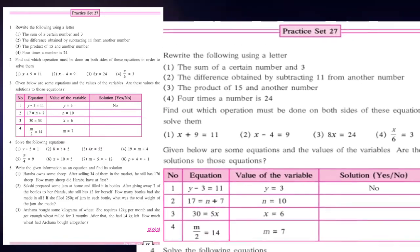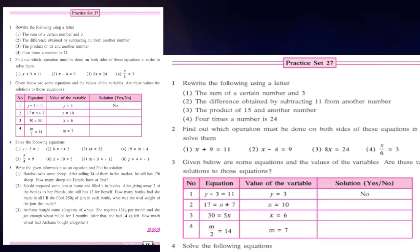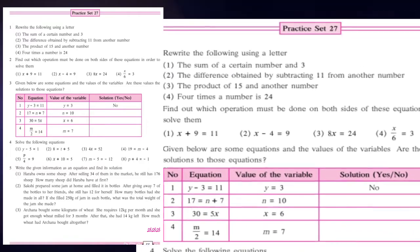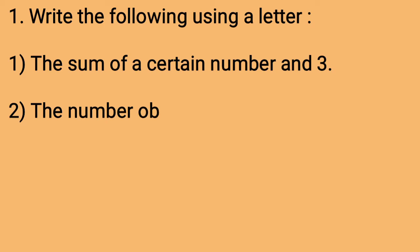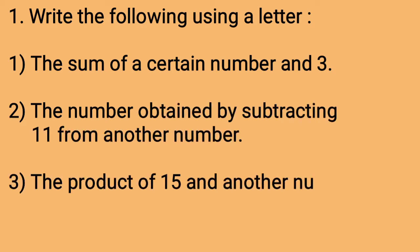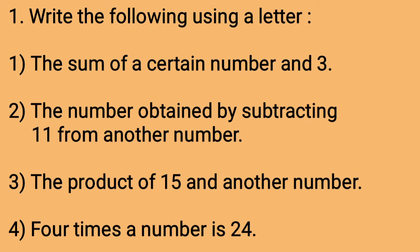Children, here total 4 questions are there. Let us see the first question. The first question is: write the following using a letter. The sum of a certain number and 3. The number obtained by subtracting 11 from another number. The product of 15 and another number. 4 times a number is 24.